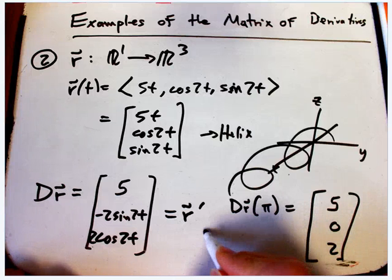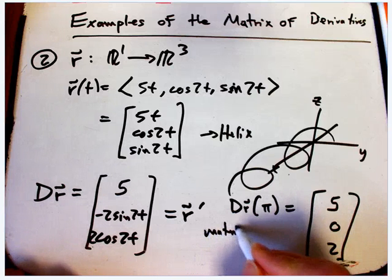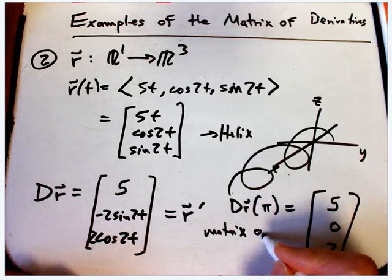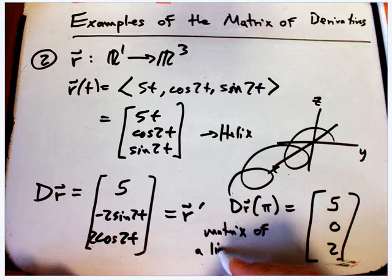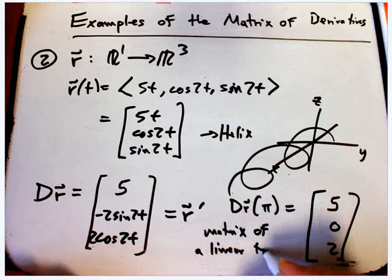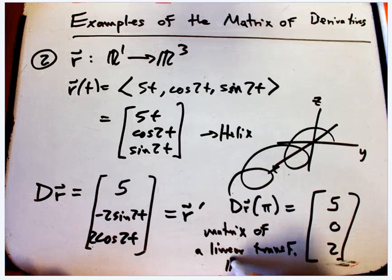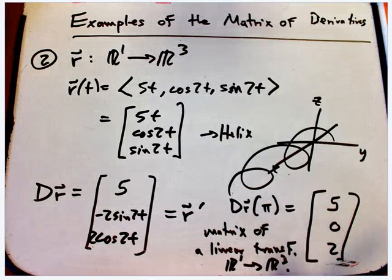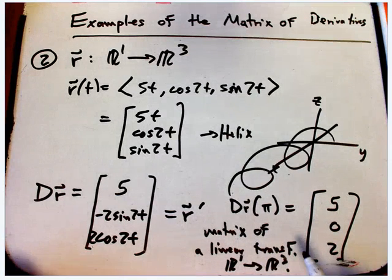That, again, is the matrix. It's the velocity vector, but it's a very big hint that it's the matrix of a linear transformation that would, of course, go from one input to three outputs. So, again, it's suggesting that we really should investigate the derivative as a linear transformation sometime fairly soon.